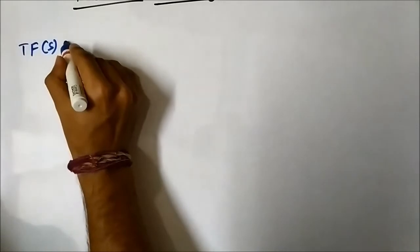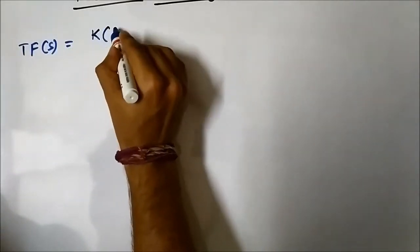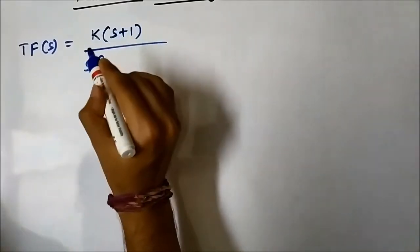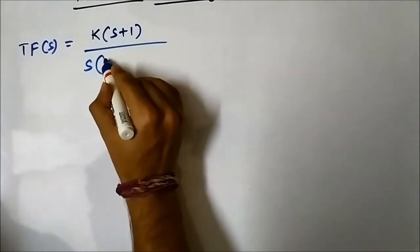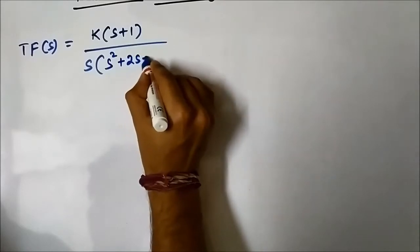We have already discussed the pole-zero plot of a transfer function with simple poles, that is poles with no imaginary parts, only real parts. Now suppose we consider a transfer function given as k(s+1) / [s(s²+2s+2)].